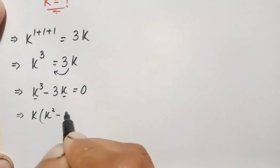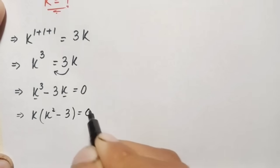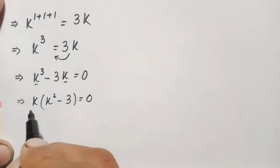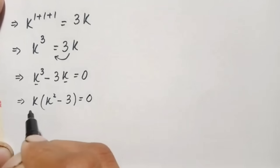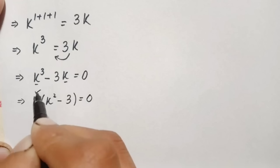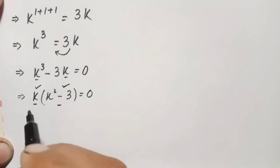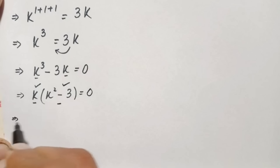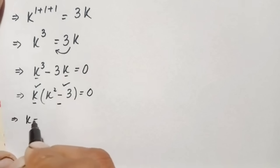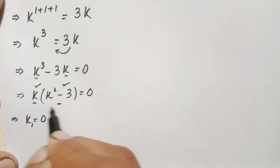In these two terms, k is common, so we take k out as a common factor from the left hand side. This gives us k times (k squared minus 3) equals zero. Since the product of these two expressions is zero, either k equals zero or the quadratic k squared minus 3 equals zero.